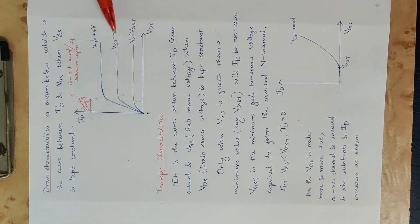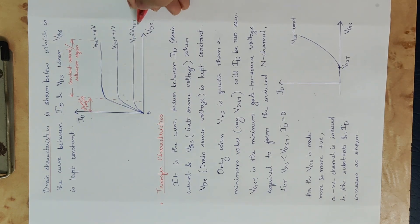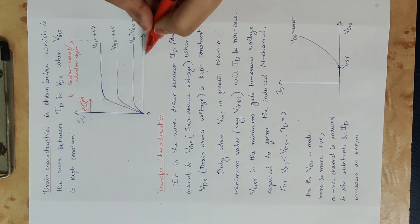How much VGS is positive? There is a minimum threshold voltage — the minimum positive gate-source voltage required so that a channel is created between the source and drain. We need to apply at least this minimum positive voltage. If VGS is below this threshold, the drain current is zero.